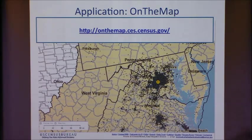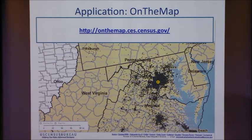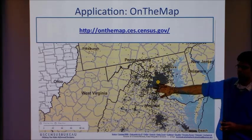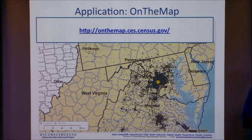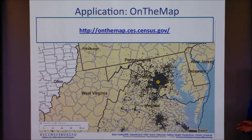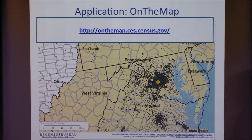One of the applications is called OnTheMap — basically it plots where people work and where people live, showing commute patterns. You can get reports of distributions of age, gender, and so on for people in a workplace or people who reside in certain locations. These are the kinds of applications they want to power.